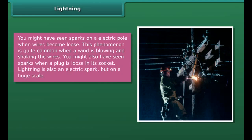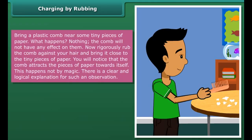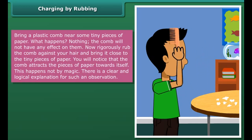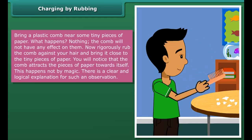You might have seen sparks on an electric pole when wires become loose. This phenomenon is quite common when a wind is blowing and shaking the wires. You might also have seen sparks when a plug is loose in its socket. Lightning is also an electric spark, but on a huge scale.